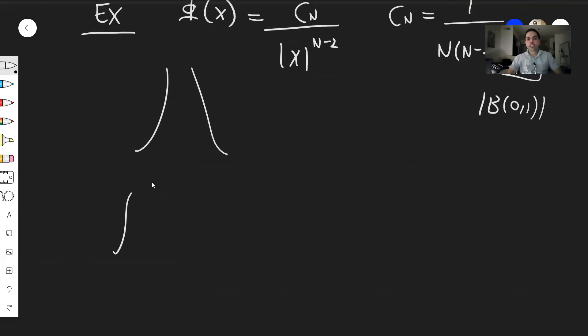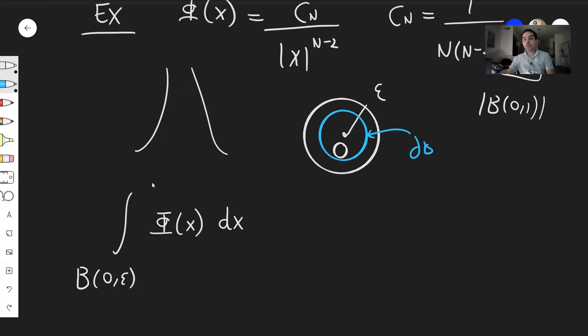if you integrate this function Φ of x over a small ball, you actually get something nice, so something that doesn't blow up. So again, you want to integrate this function phi over the ball centered at zero and radius epsilon. So again, the polar coordinates formula is very handy. So integrate,